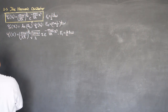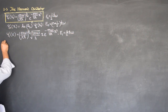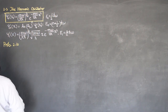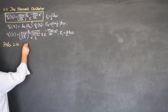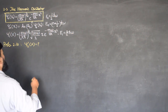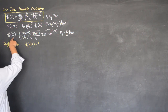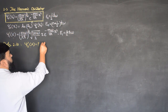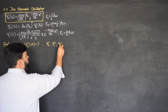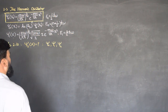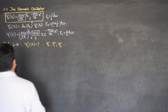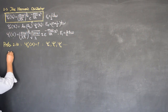Now, in Problem 2.10, it is being asked to calculate ψ₂(x) as well. So in this problem we will have to calculate ψ₁(x) and ψ₂(x), and then we will have to plot ψ₀, ψ₁, and ψ₂(x), and we will have to examine some features of these wave functions. So we start with ψ₂(x) since we still need to find that one.